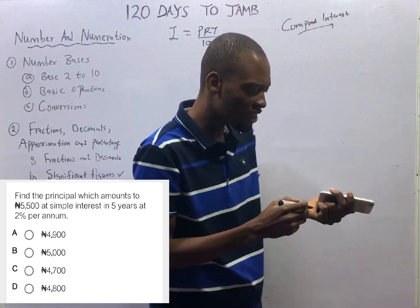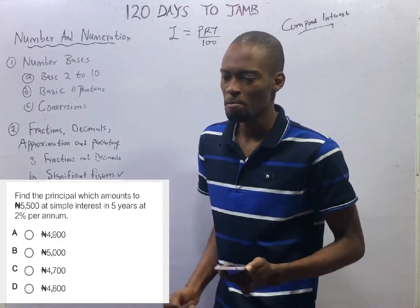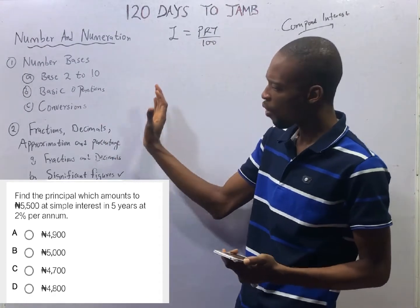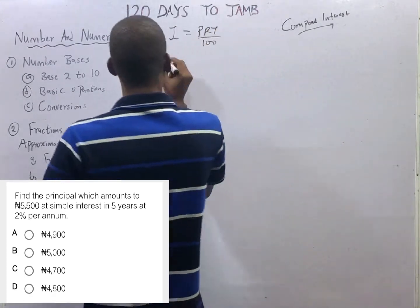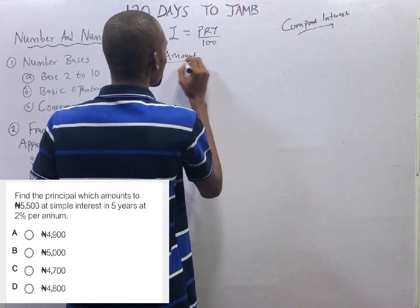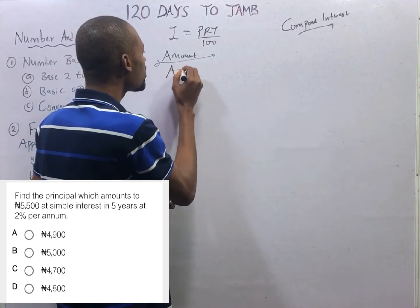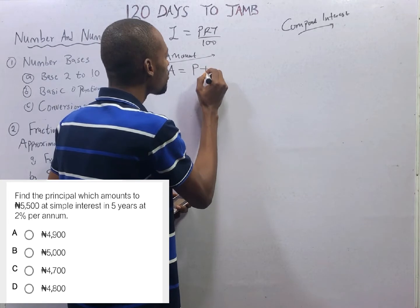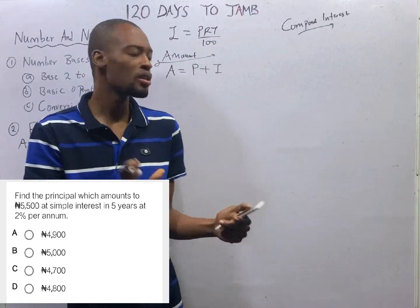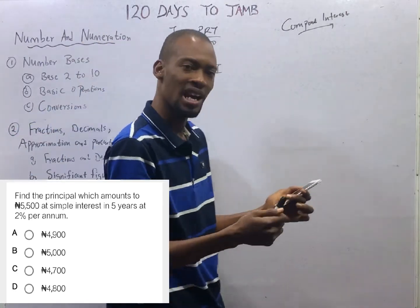Any time you see or hear 'amount' in a question that looks like a simple interest question, you need to change your mindset. Don't just substitute or hurry. You simply tell yourself: amount. What is amount? Amount equals principal plus interest. With this knowledge, you will be able to solve any question that involves amount.